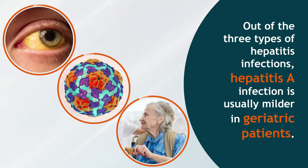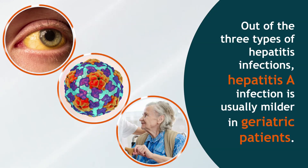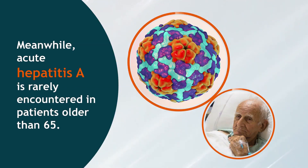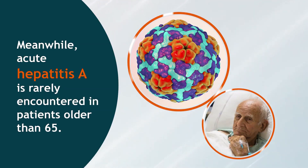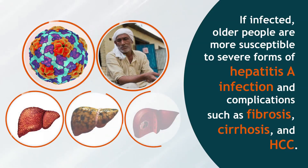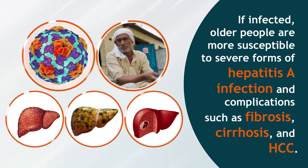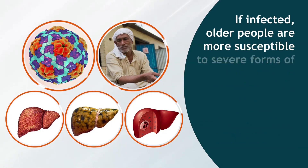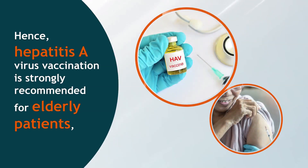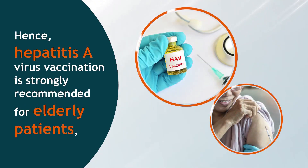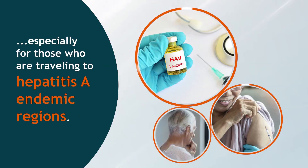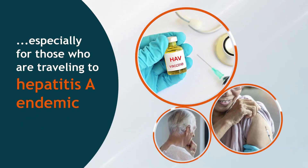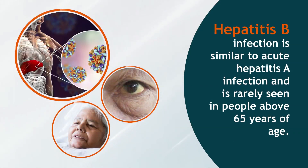Hepatitis A: Out of the three types of hepatitis infections, hepatitis A infection is usually milder in geriatric patients. Acute hepatitis A is rarely encountered in patients older than 65. If infected, older people are more susceptible to severe forms of hepatitis A infection and complications such as fibrosis, cirrhosis, and HCC. Hence, hepatitis A virus vaccination is strongly recommended for elderly patients, especially for those traveling to hepatitis A endemic regions.